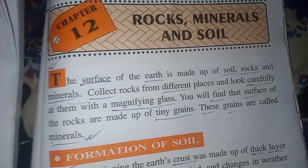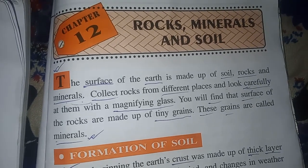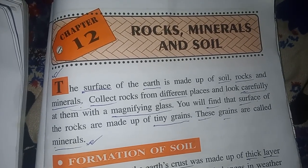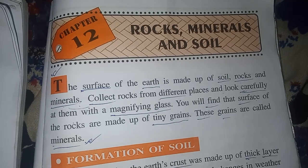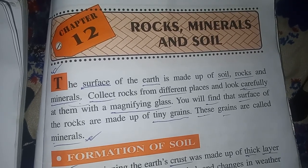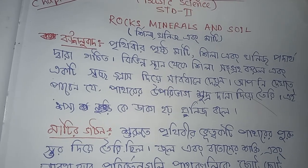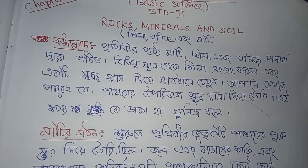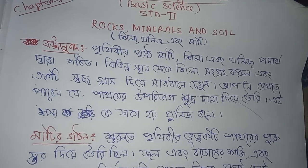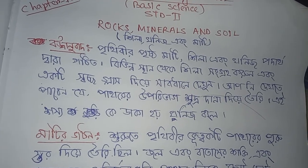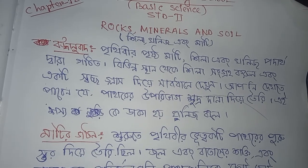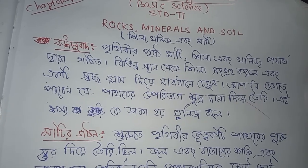Collect rocks from different places and look carefully at them with a magnifying glass. You will find that the surface of the rocks is made of tiny grains. These grains are called minerals.